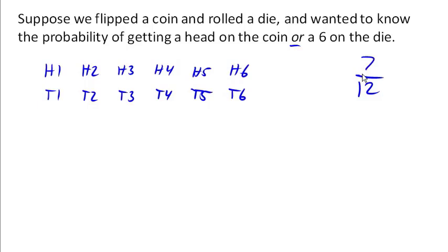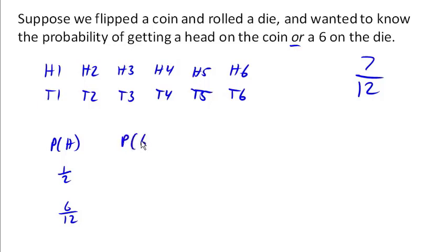Could we have figured that out another way by looking at the two events separately? The probability of a head is 1/2, or 6 out of 12. The probability of rolling a 6 on the die is 1 out of 6, or 2 of our total outcomes. Notice if we just added these two up, we'd get 8 out of 12 — too many. Why? Because we're counting 6 for the heads and 2 for the 6s, but we've counted one outcome — head and 6 — twice.